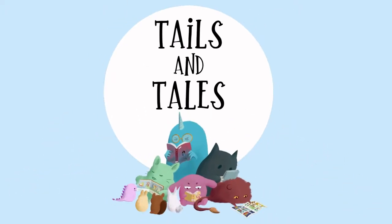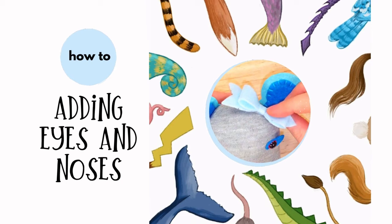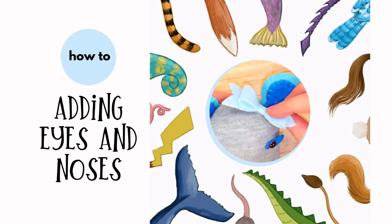Hello and welcome to our Summer Reading Tails and Tales Buddy Making video series from the Public Library of Brookline. My name is Robin and I'm a teen librarian at the Brookline Village Library. I'm here today to show you how to make a bow out of felt.